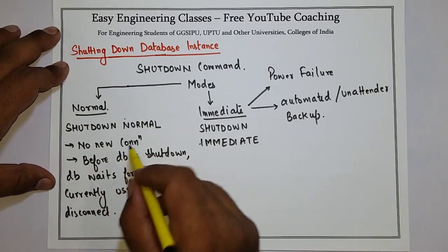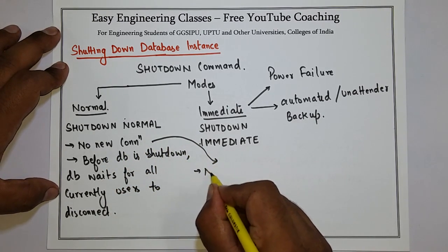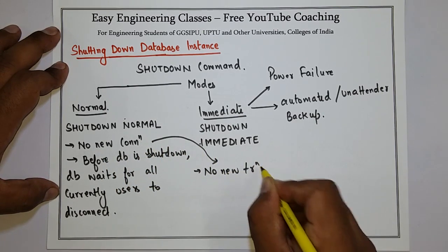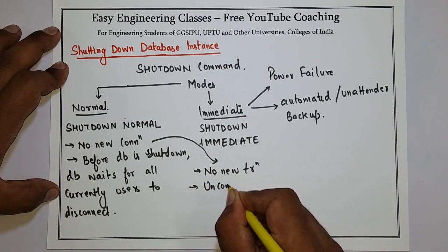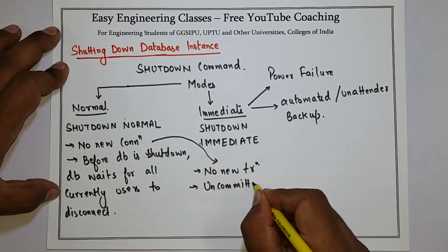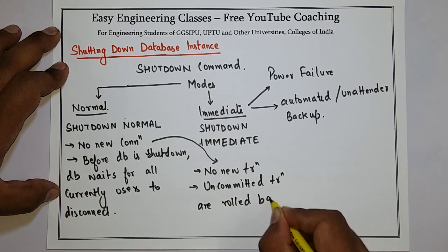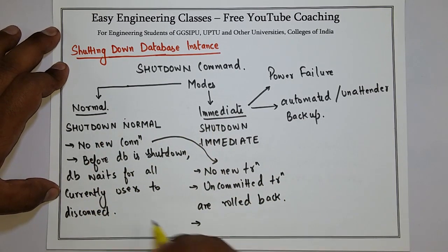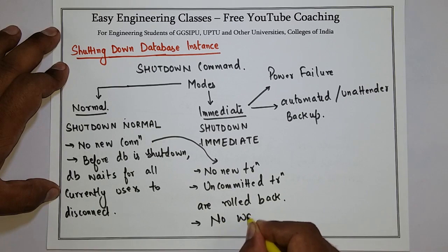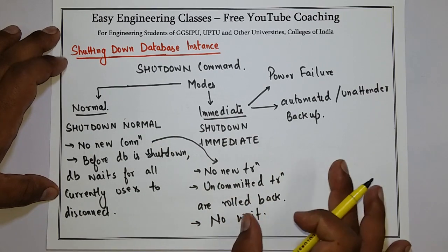In immediate mode, the first condition is the same — there will be no new connection. Additionally, no new transaction is allowed, and all uncommitted transactions are rolled back. The difference between normal and immediate is that where normal waits for currently connected users to disconnect, immediate does not wait for users to disconnect.